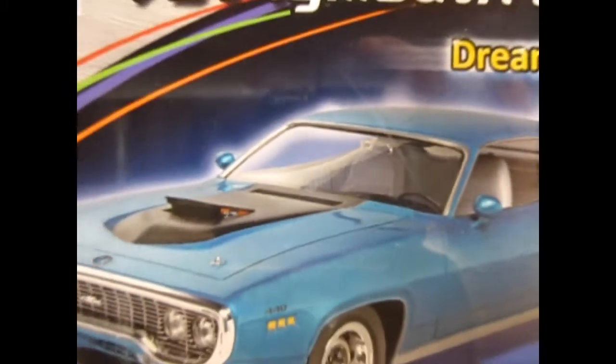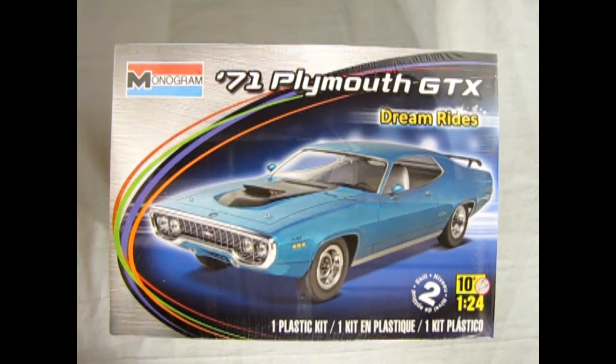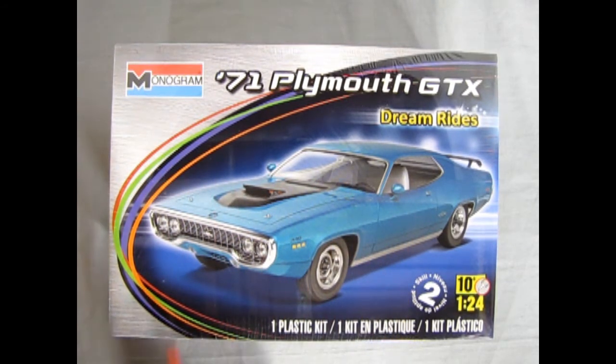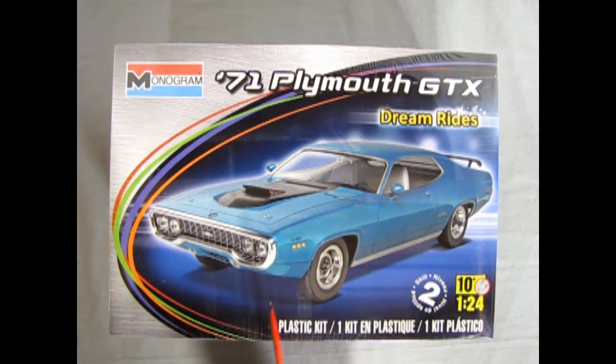Now we wind the clock back to 1971 where we check out this cool Plymouth GTX. This is part of the Dream Rides series, which is pretty cool - it's like a dream come true. This is a Monogram kit loaned to us by our good friend James, which is really cool because I don't have this kit in my collection. I've been wanting one of these, and there is a new release of this as one of the Fast and Furious cars.